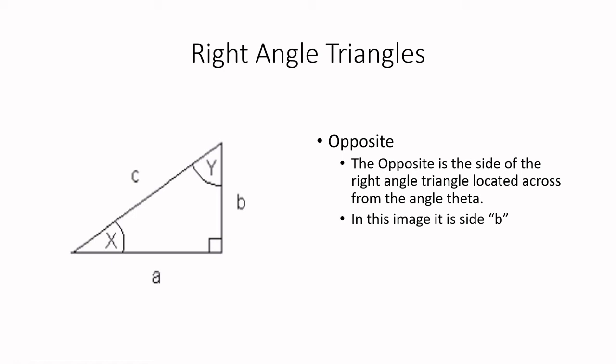The next side of the triangle we're going to talk about is the opposite. And so here in this case, the opposite is side b. And the reason we call it the opposite is because it is opposite of the angle theta. So just like c is across the triangle from the right angle, the opposite is across the triangle from the angle theta. In this case, we decided that we were going to use x as the angle theta, which means that b is the opposite.